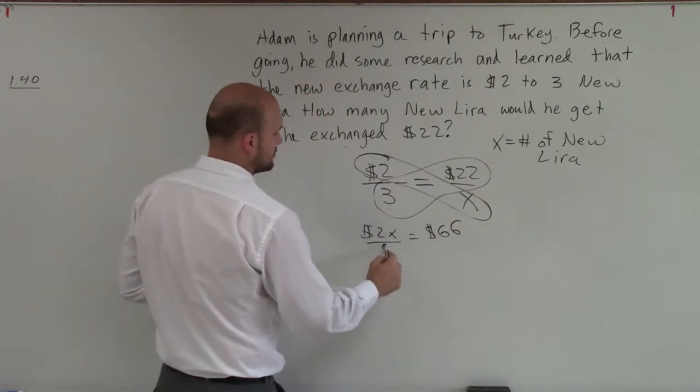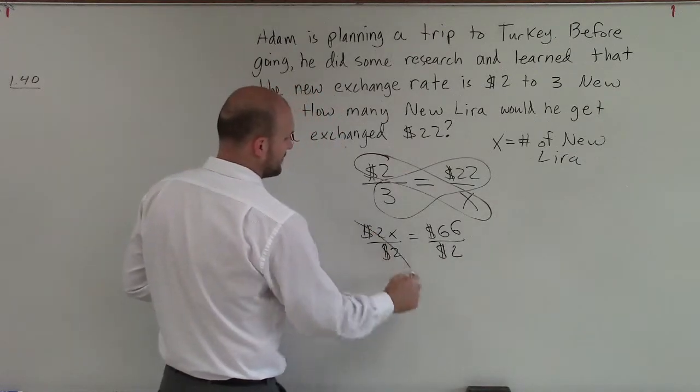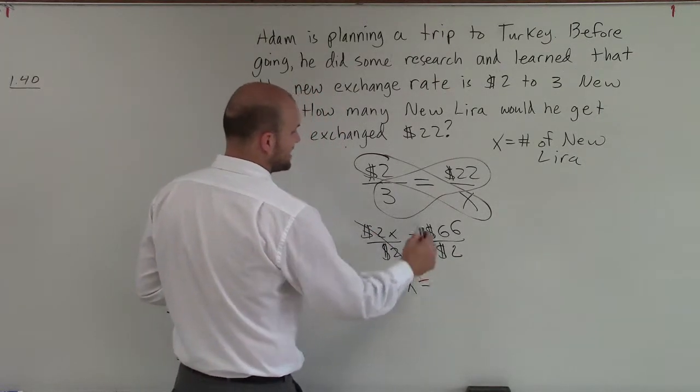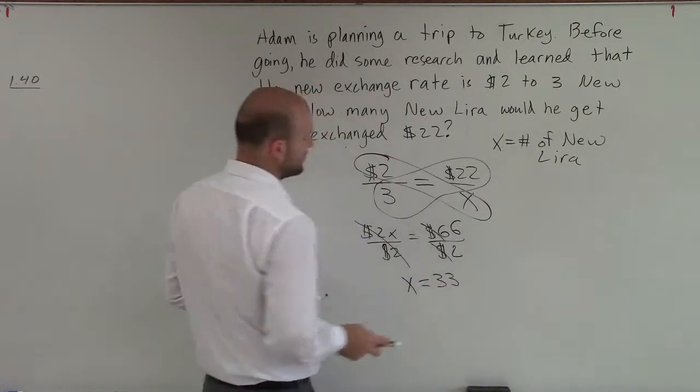Then I divide by 2. And therefore, that divides out to 1, I'm left with x. These divide out to 1, and I'm left with 66 divided by 2, which equals 33.